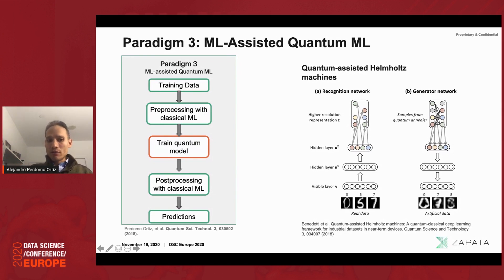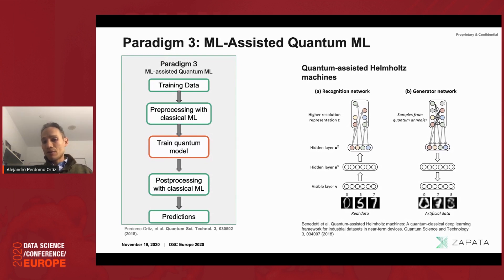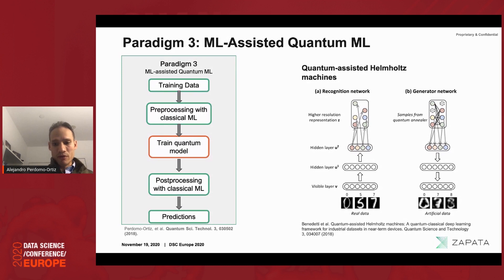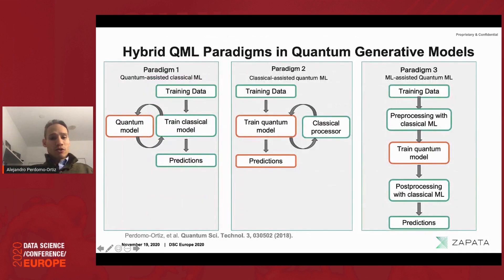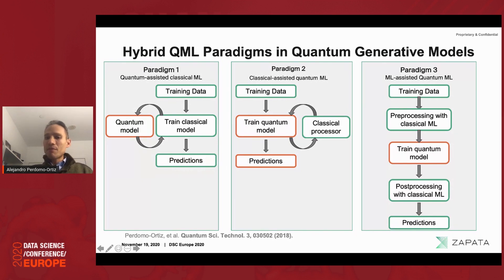We'll be posting an exciting paper to arXiv in the coming weeks about recent experiments scaling to large datasets, where quantum computers are catching up with state-of-the-art classical ML models. To wrap up, I've given you three different paradigms for where to plug in a quantum computer in machine learning. The most sophisticated and most powerful one — paradigm three — is also the one requiring the most innovation.